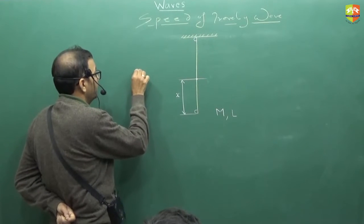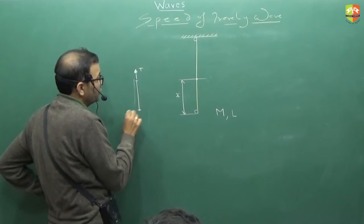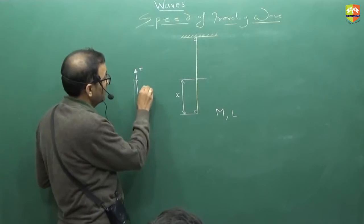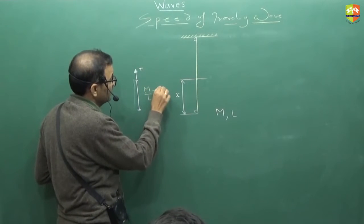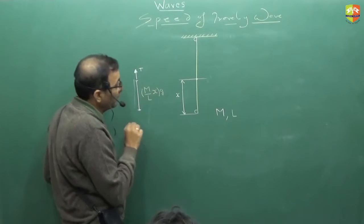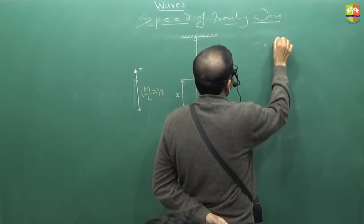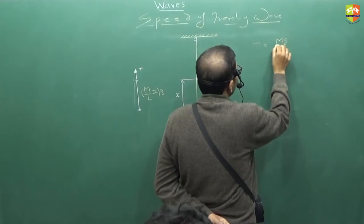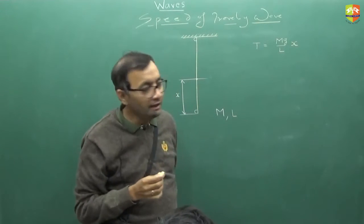Draw the free body diagram of this portion. Tension will pull it up. This is T. What is the mass of this portion? M by l times x. So this times g will be downward force. The tension is what? Mg by l times x. This is the tension at a particular x. Right?